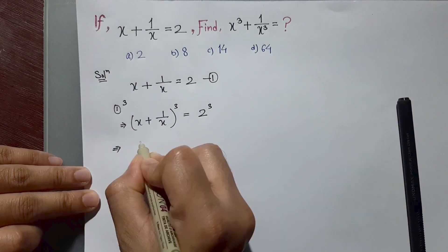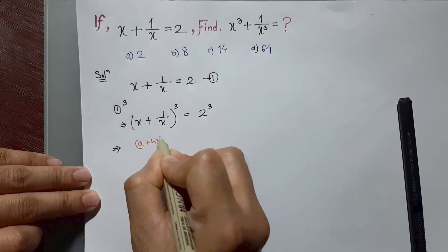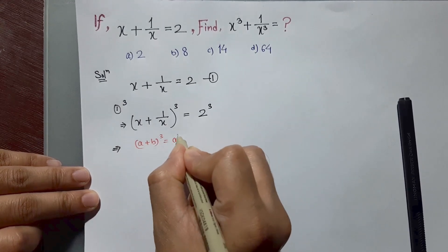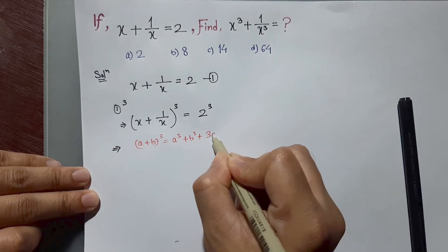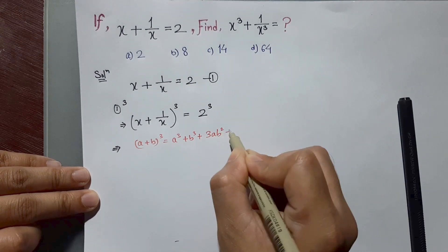The a plus b whole cube formula is: a cube plus b cube plus 3 a square b plus 3 a b square. So let's apply it.